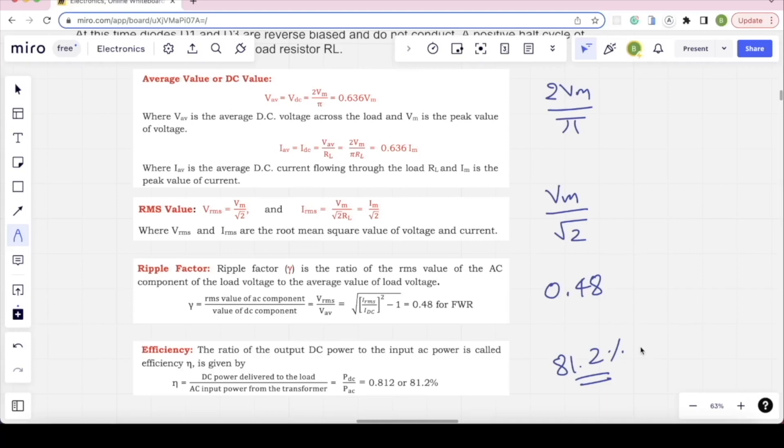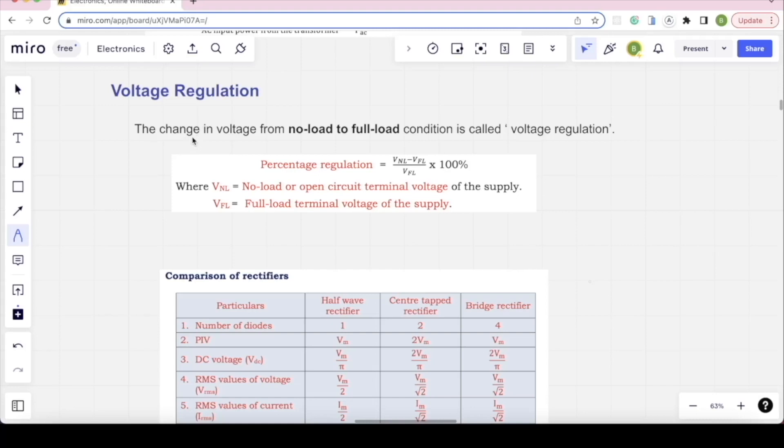Change in the voltage from no-load to full-load is voltage regulation. The formula is V no-load minus V full-load divided by V full-load into 100%. This formula directly gives voltage regulation.